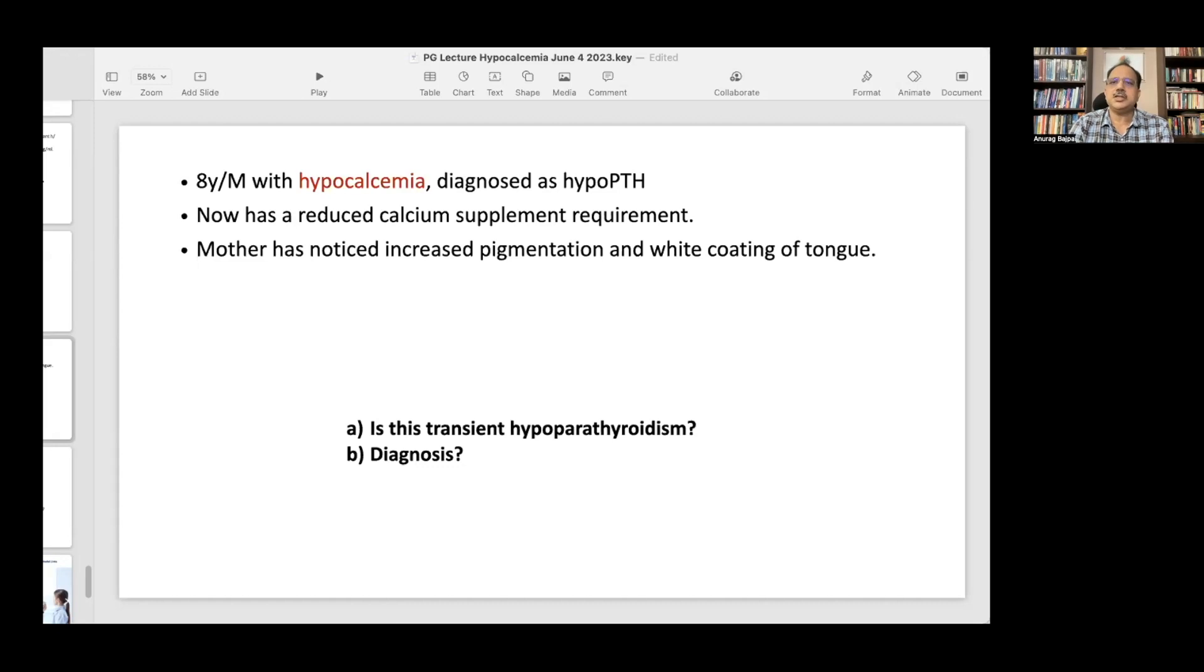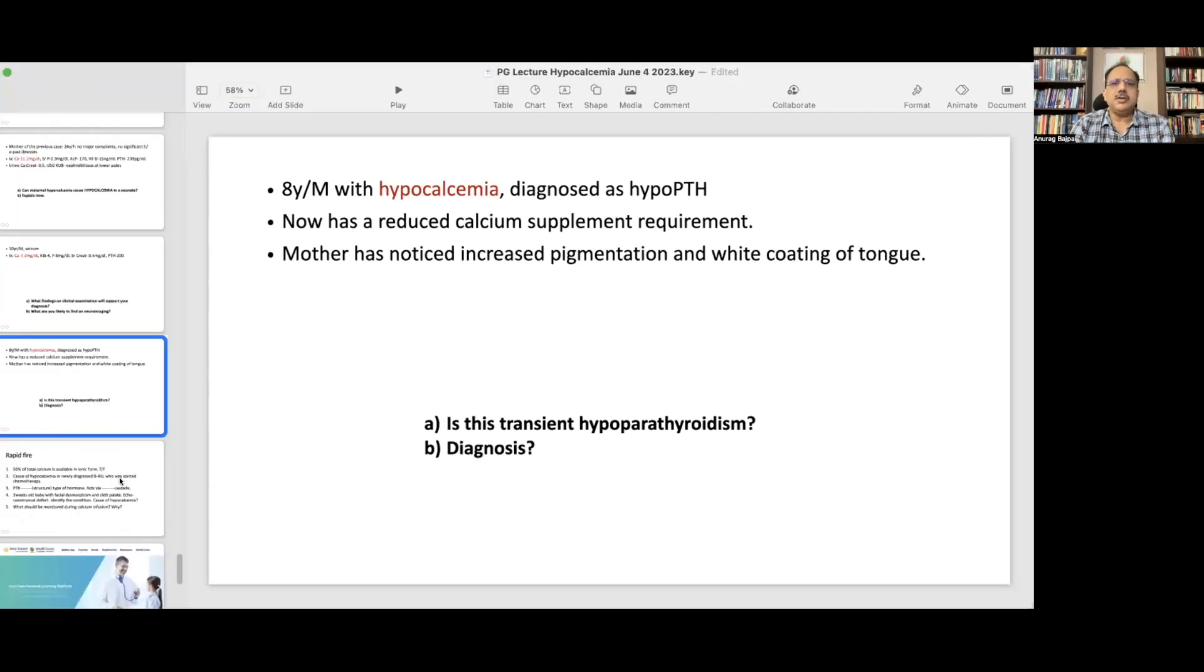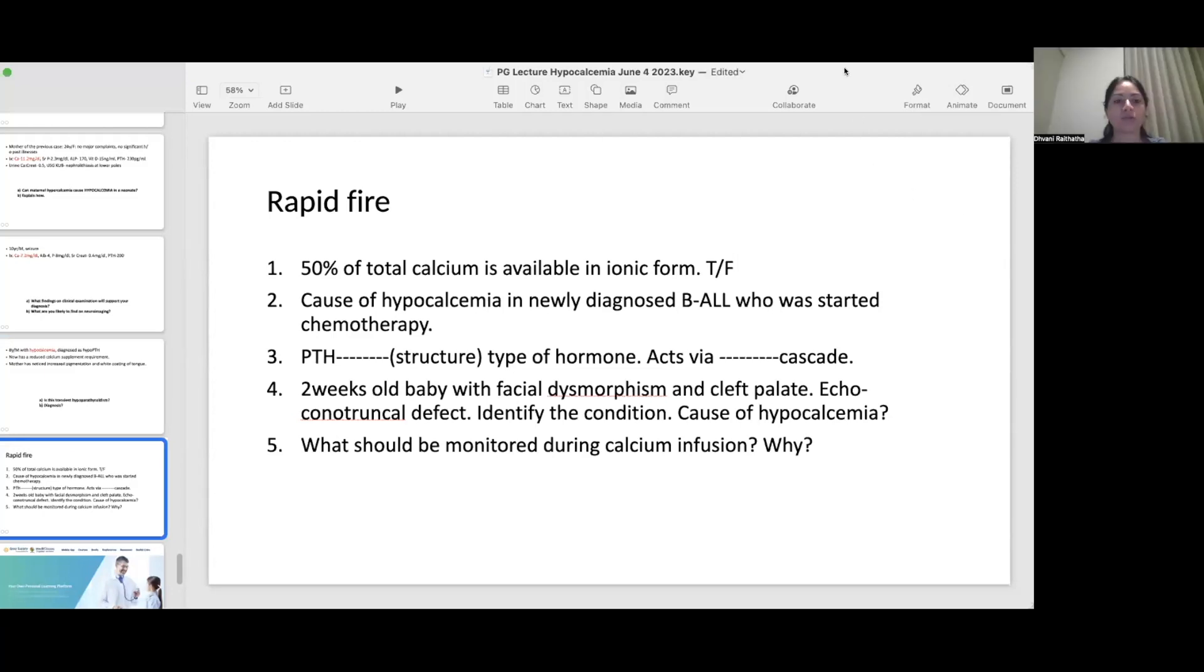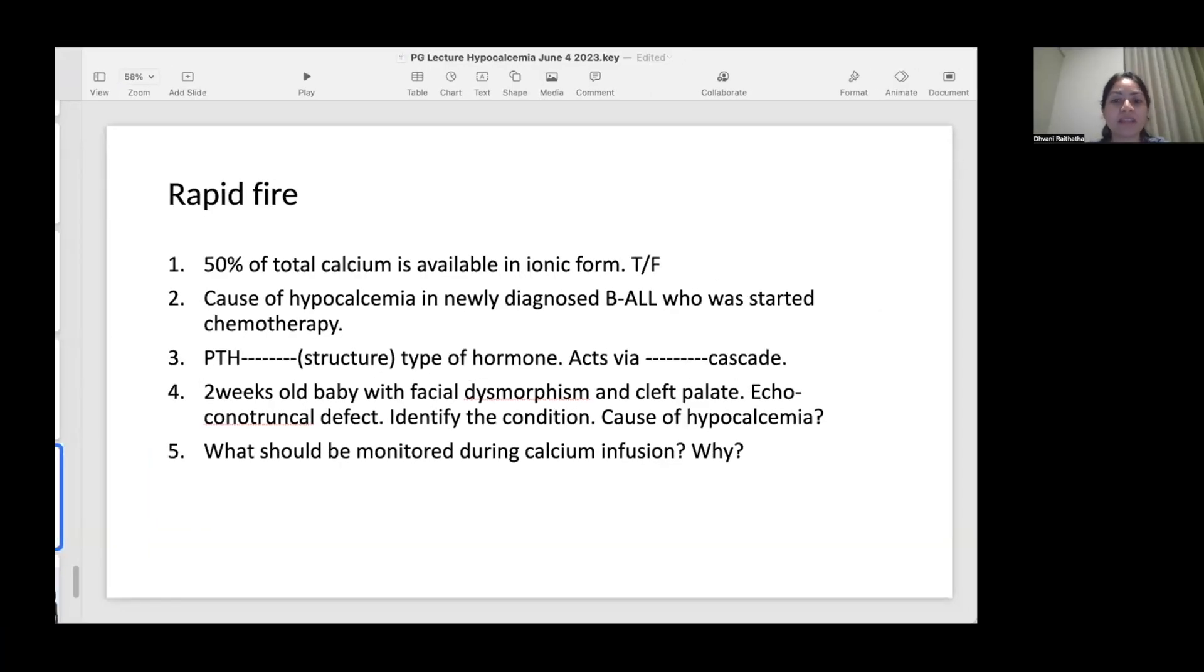Now we've got some rapid fires. First: 50 percent of total calcium is available in the ionic form, true or false? Yes, this is true, 50 percent is ionic and 50 percent is bound. Next: 99 percent of total calcium is in the bones and only 1 percent is extracellular. This was a trick question. We could have mentioned total body calcium.